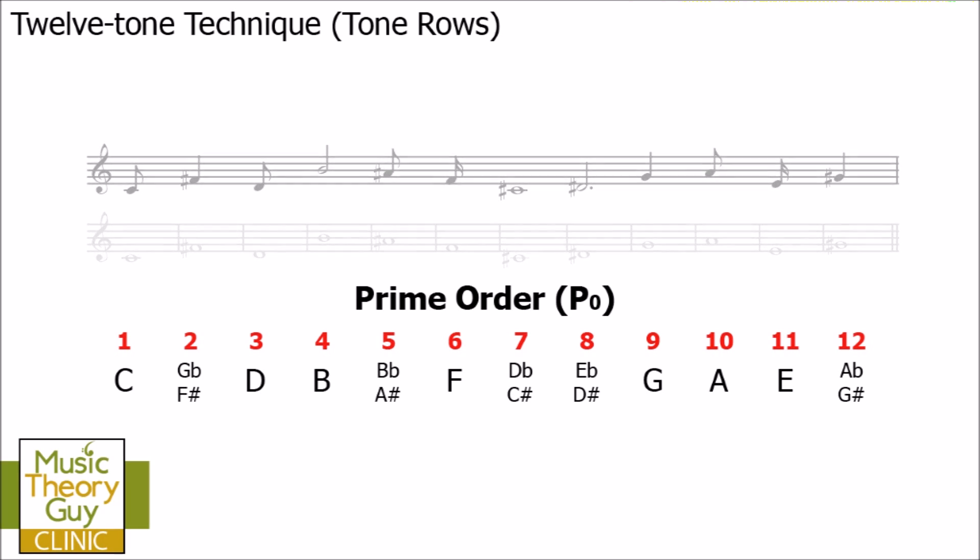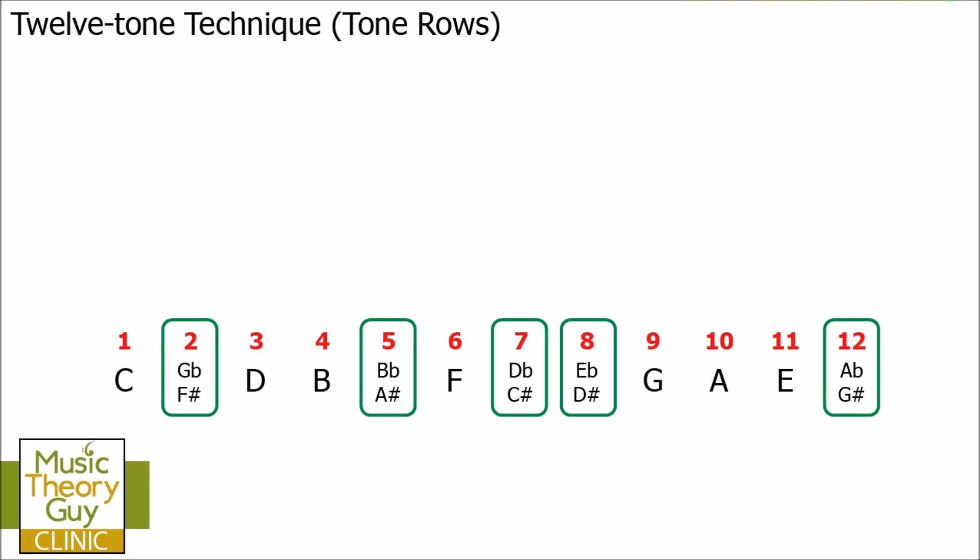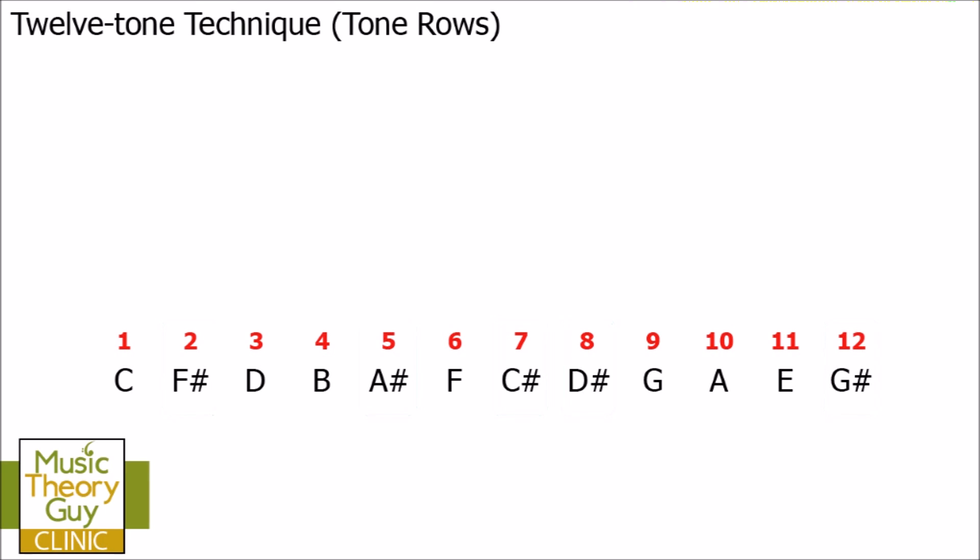Now, of course, we don't have to just stick with that prime order. We can create other rows from it. But before we do, I'm just going to make a small little change. All of the black notes, which I've just highlighted green, I'm going to turn them into sharps. So, the G-flat and F-sharp at number two, I'm going to turn them into an F-sharp. Now, there's no real reason for this. I could turn them into flats or I could have turned some into sharps and some into flats. It's just for ease of reference for the rest of this video. So, as I've already said, this row of different pitches is called the prime order or P-zero. Let's have a quick look at what that P and the zero represent.